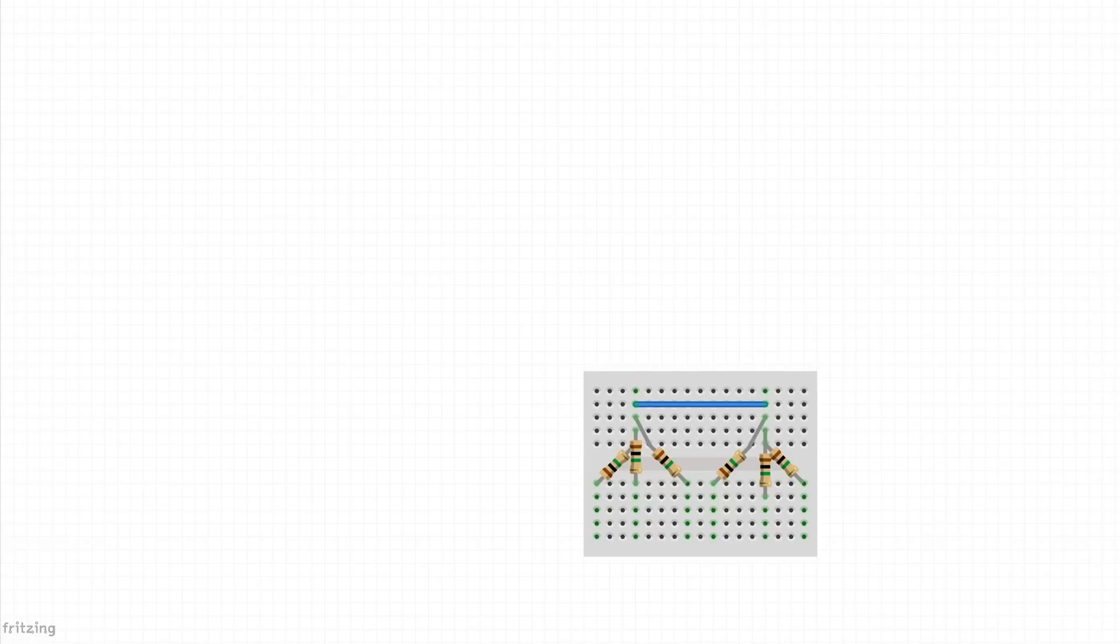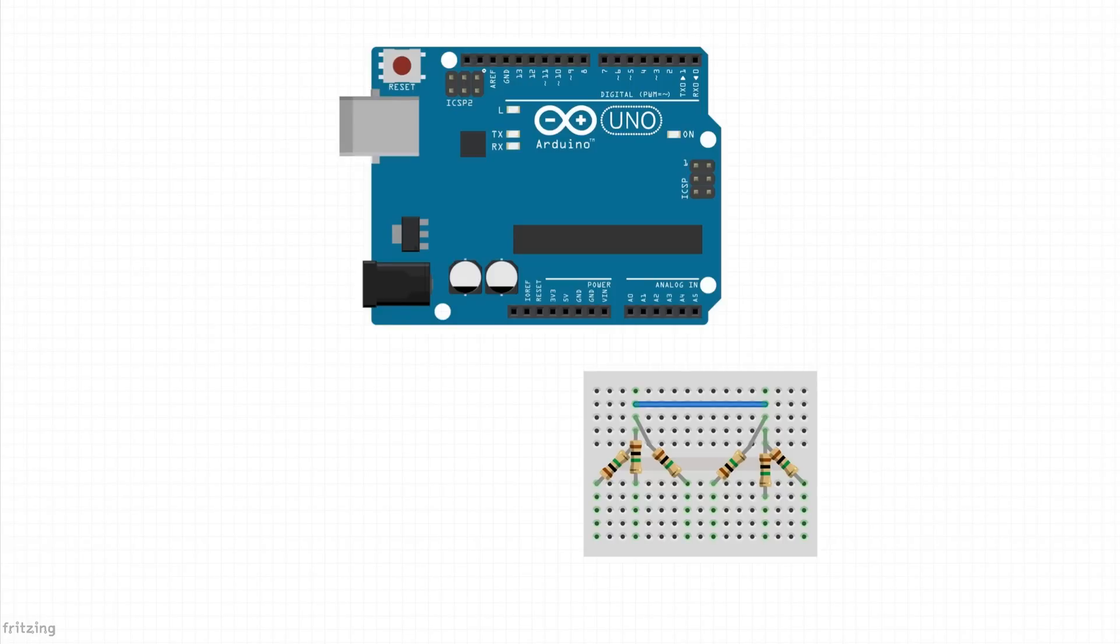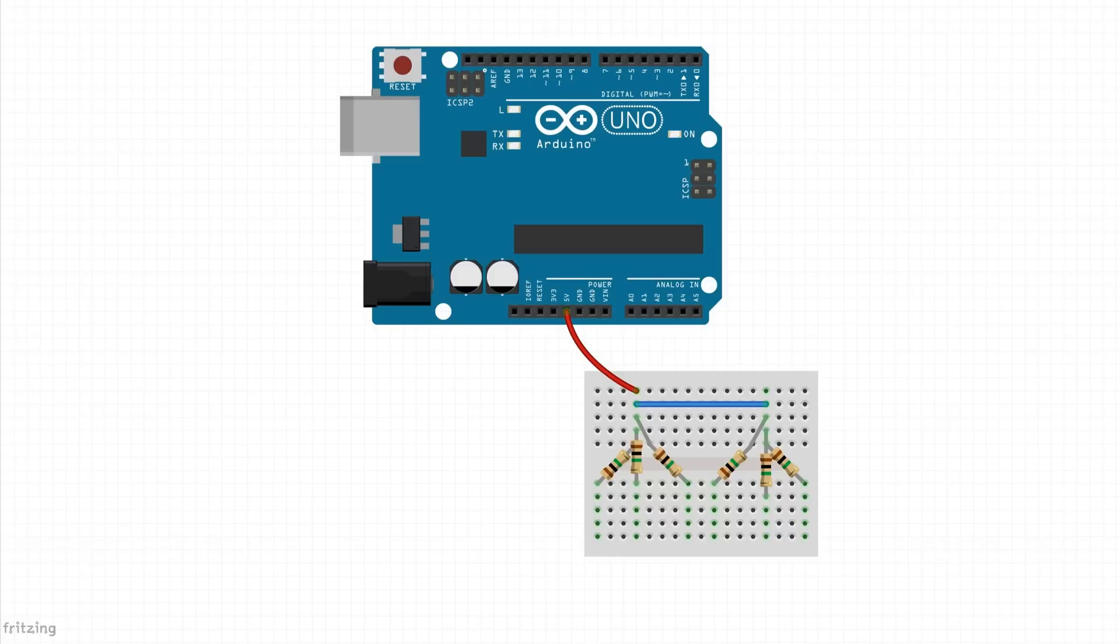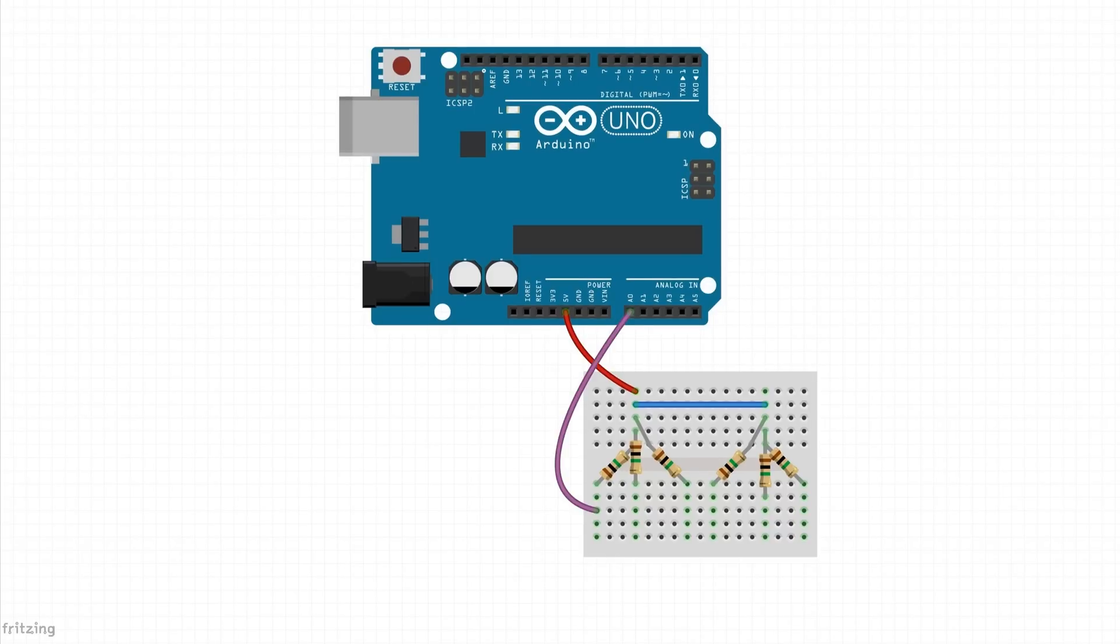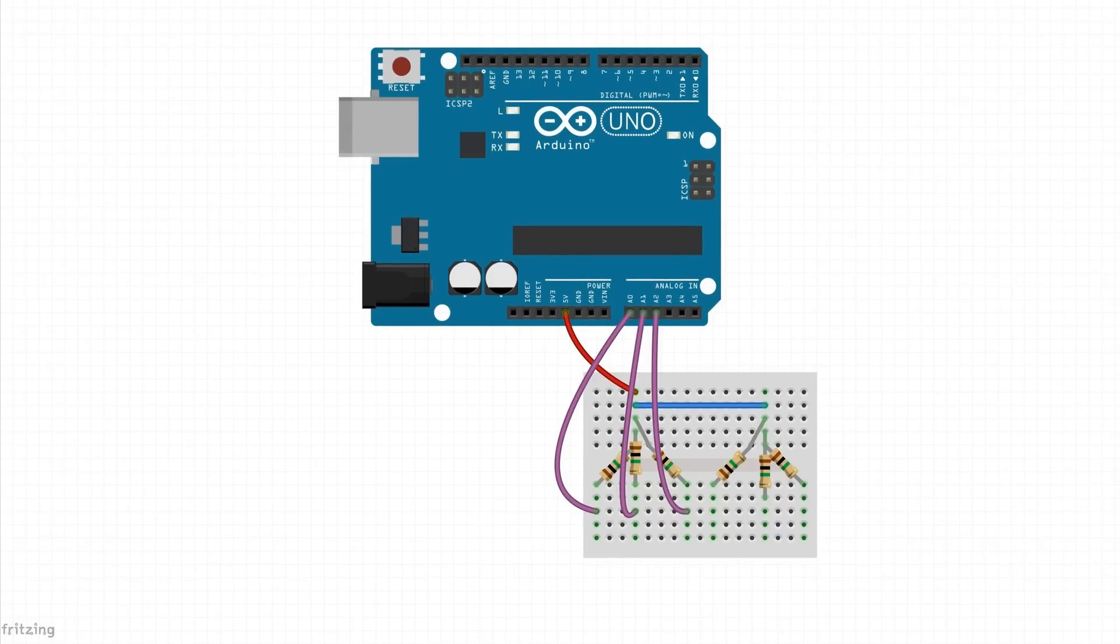Then connect the two shared rows with the jumper wire. Now connect one shared row to the Arduino 5 volt with the jumper. Then connect one jumper wire from each resistor to an analog input.